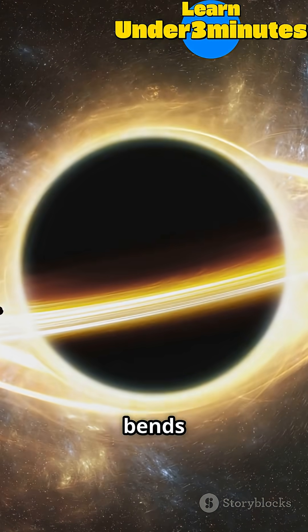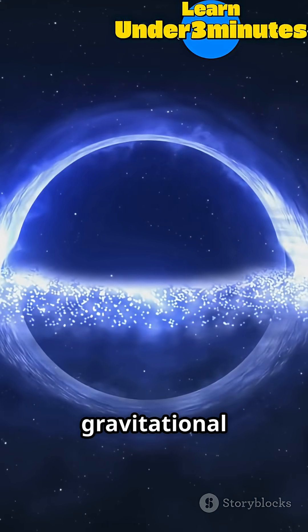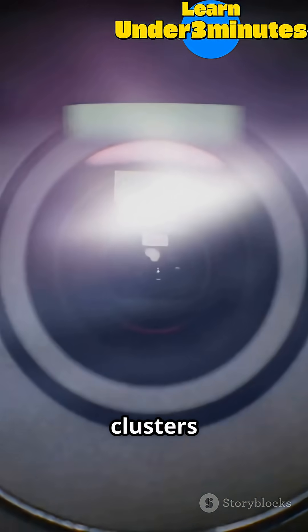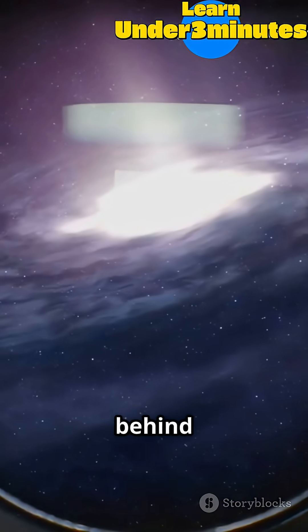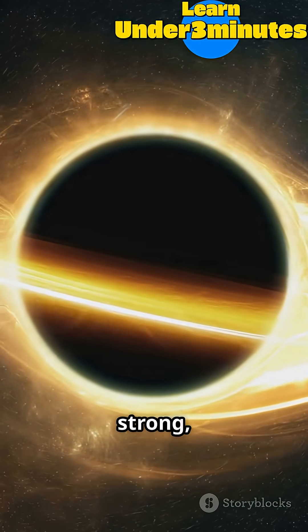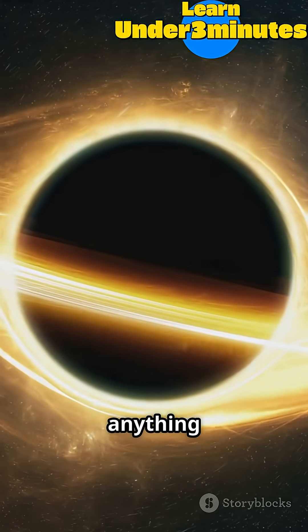Dark matter literally bends light. Through a phenomenon called gravitational lensing, massive clusters of invisible mass distort and magnify light from galaxies behind them. The effect is so strong it can't be explained by anything we can see.